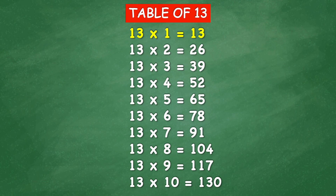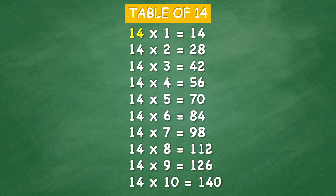Table of 13: 13 times 1 equal 13, 13 times 2 equal 26, 13 times 3 equal 39, 13 times 4 equal 52, 13 times 5 equal 65, 13 times 6 equal 78, 13 times 7 equal 91, 13 times 8 equal 104, 13 times 9 equal 117, 13 times 10 equal 130.